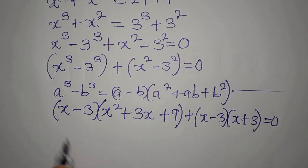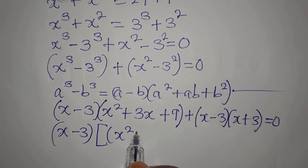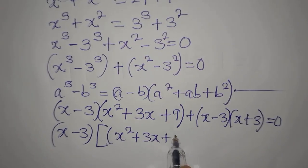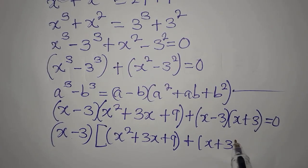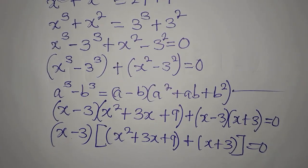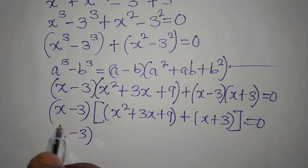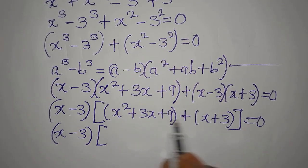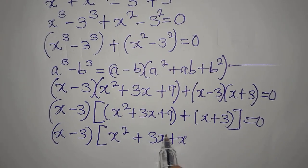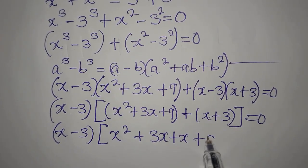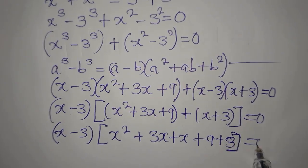Now (x minus 3) is a common factor. Expanding and combining the remaining terms from both factors — x² plus 3x plus 9 plus (x plus 3) — we collect like terms: x² plus 3x plus x gives x² plus 4x, and 9 plus 3 gives 12. We equate to zero.